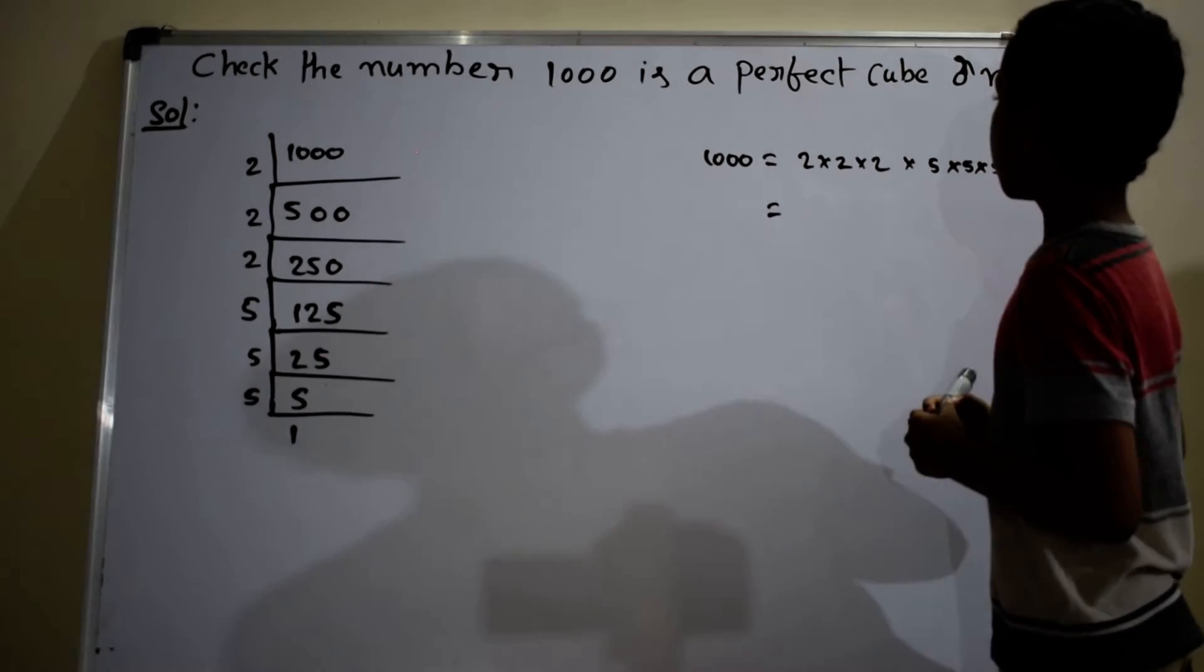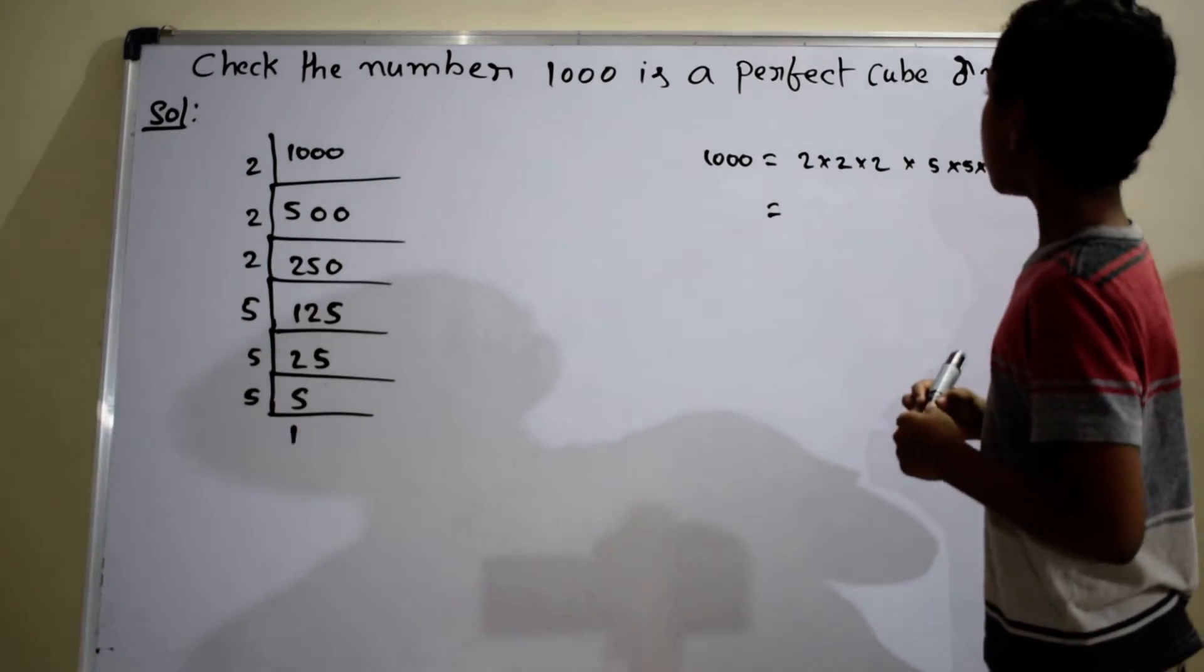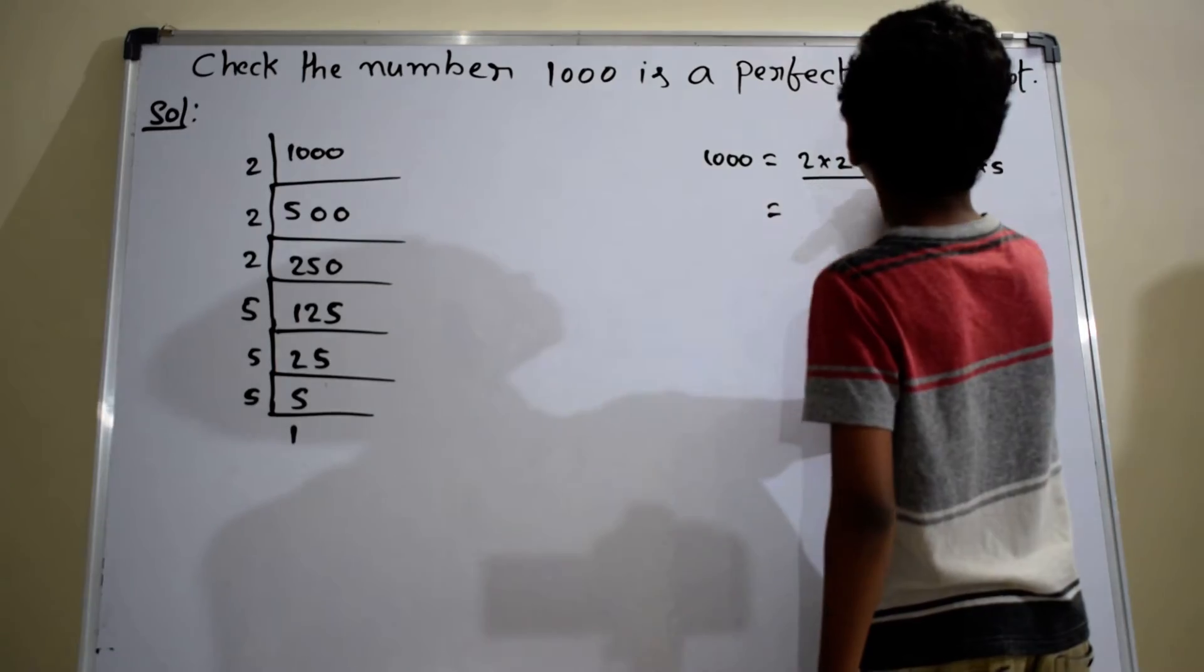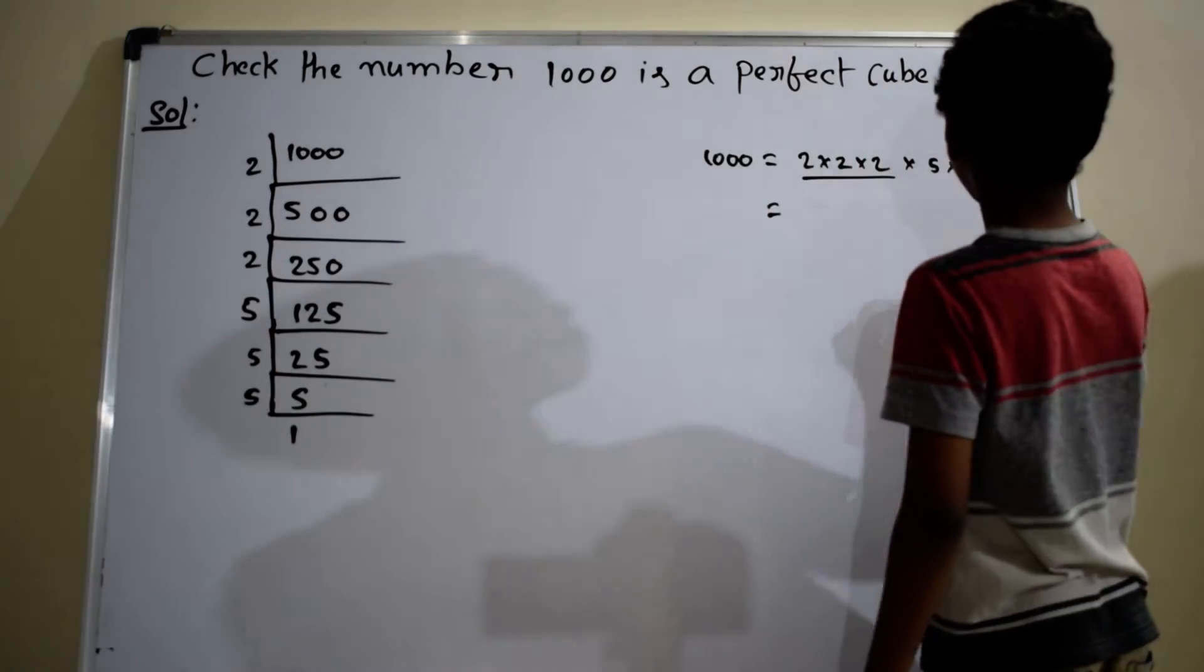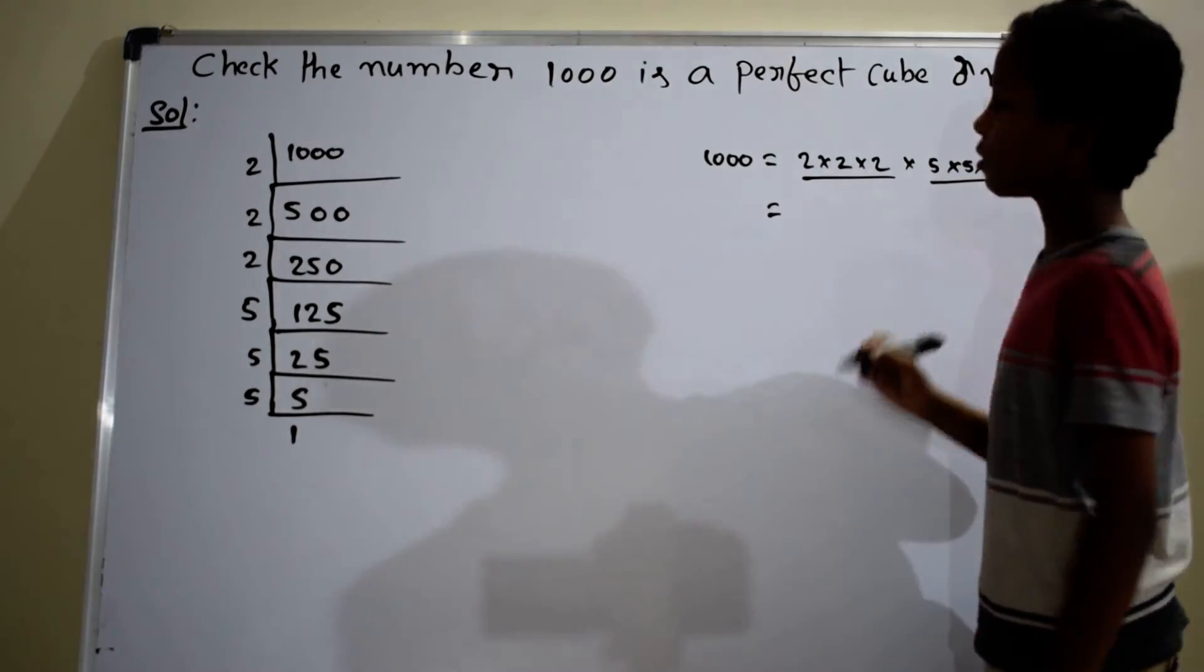Now we form triplets of equal primes. First 3 twos form a triplet, this is triplet 1. And another 3 fives form a triplet, this is triplet 2.